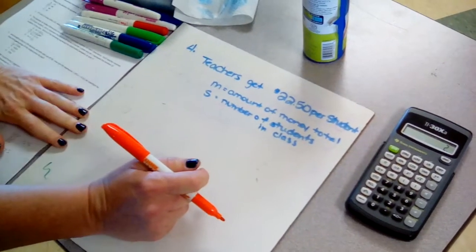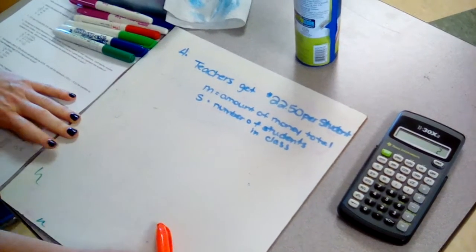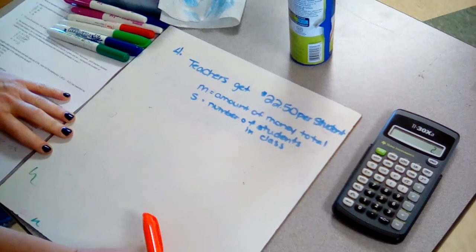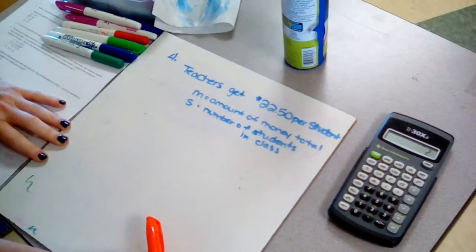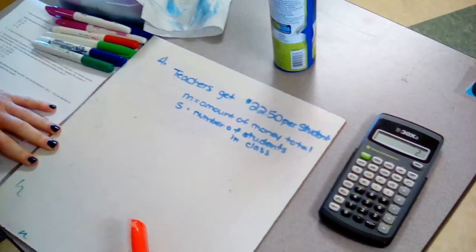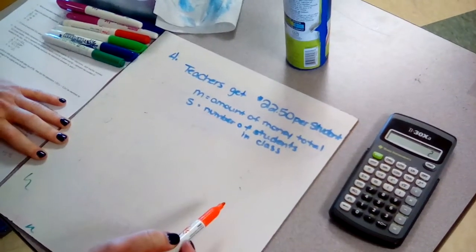So we're on question number four and the question is asking us or telling us that the teachers at Walker Elementary are given money to purchase supplies for their classrooms. Each teacher receives $22.50 per student. So I wrote that down here.